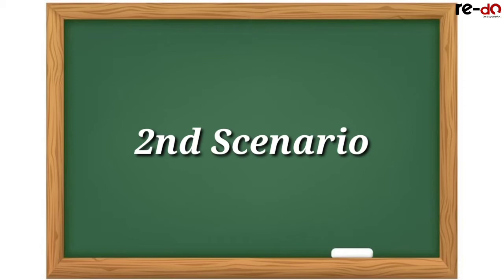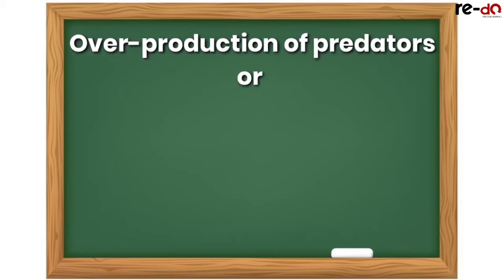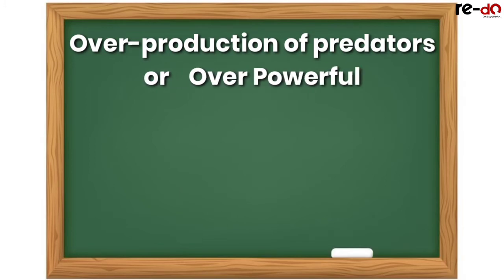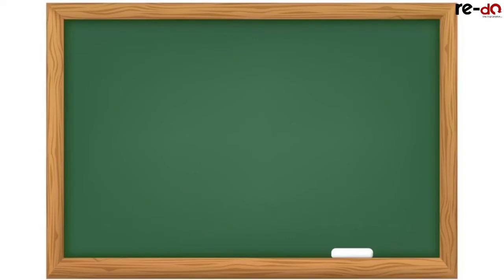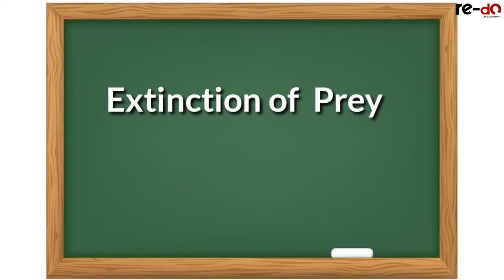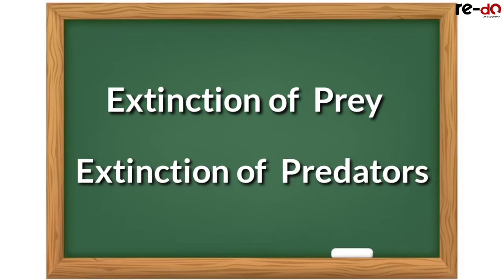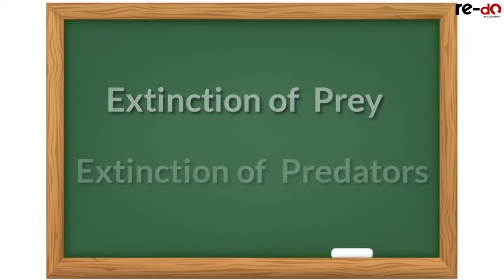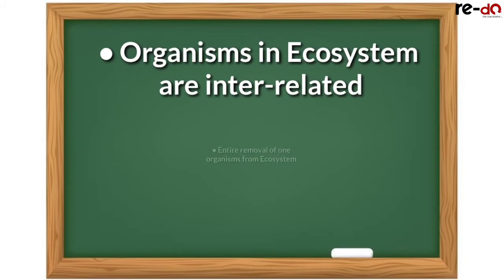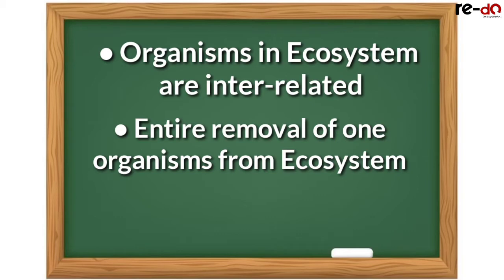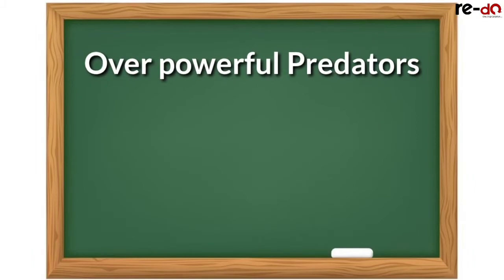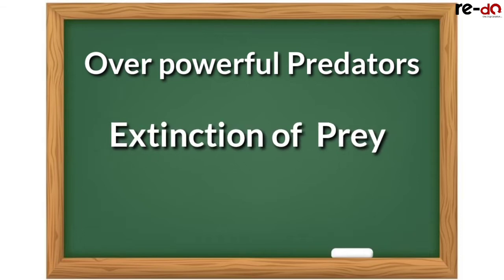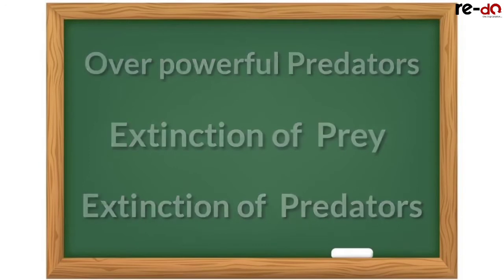Let's consider a second scenario wherein if there is overproduction of predators or if the predator becomes overly powerful. If a predator is overly powerful, he will overfeed, which will lead to the over-exploitation of the prey. This in turn can result in extinction of the prey, which in turn results in the extinction of the predator. You have to realize that it is all connected — every organism in the ecosystem is interrelated to each other. So the entire removal of one particular organism from the ecosystem will hinder the entire balance of the ecosystem. In the case of overpowerful predators, the prey becomes overexploited, which may lead to the extinction of the prey and in turn lead to the extinction of the predator himself.